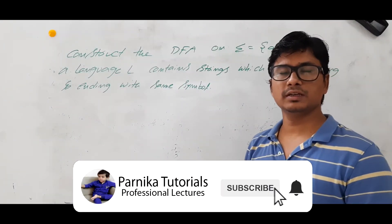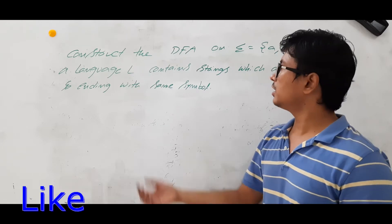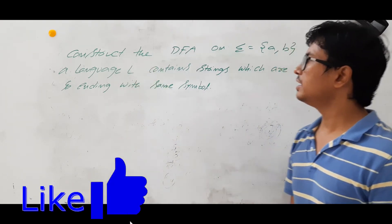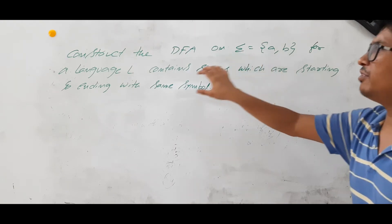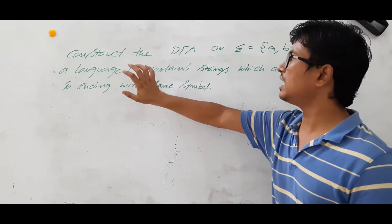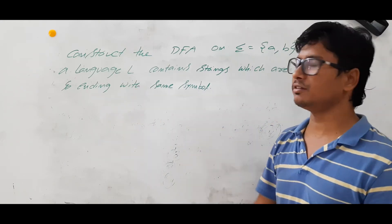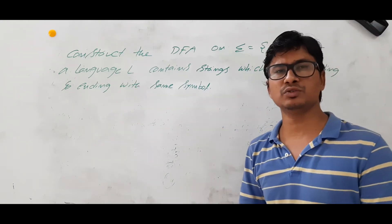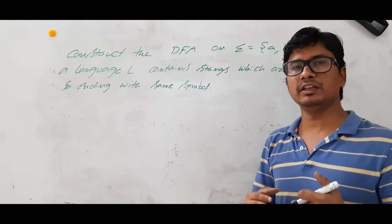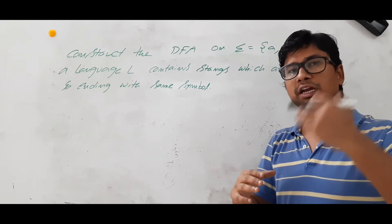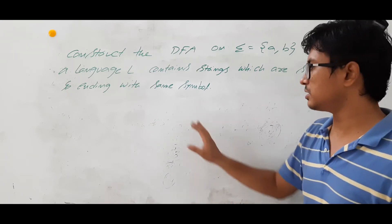Good morning students. In this video, we will solve another question related to the DFA. Construct the DFA on alphabets A and B for the language L containing strings which are starting and ending with the same symbol. In the previous question, we solved finding the DFA for starting and ending with different symbols. But this is starting and ending with the same symbol.